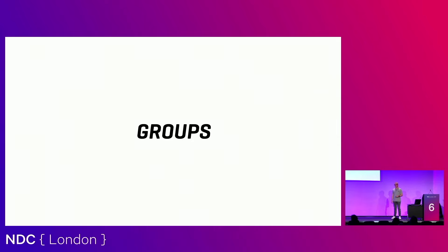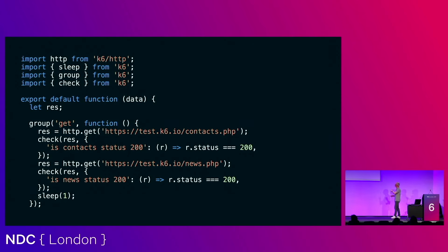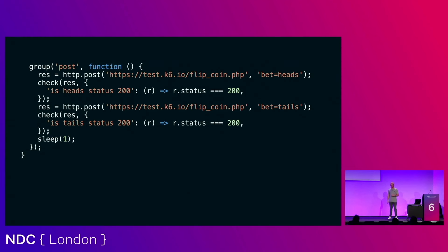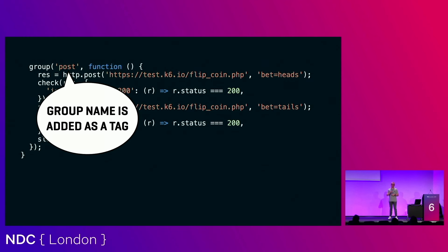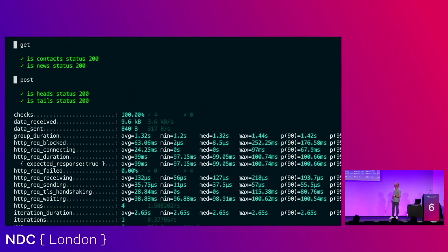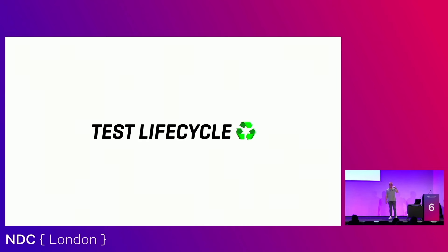One more concept: groups. Groups are also a key concept for categorizing things. You can create a group for similar HTTP requests — for example a group called "get" that only does GET calls with the HTTP requests, checks, and all the bells and whistles. Then another group called "post" containing all the POST requests. The group name you define will eventually become a tag in your results — so you can see the main group name hierarchically with its associated checks.